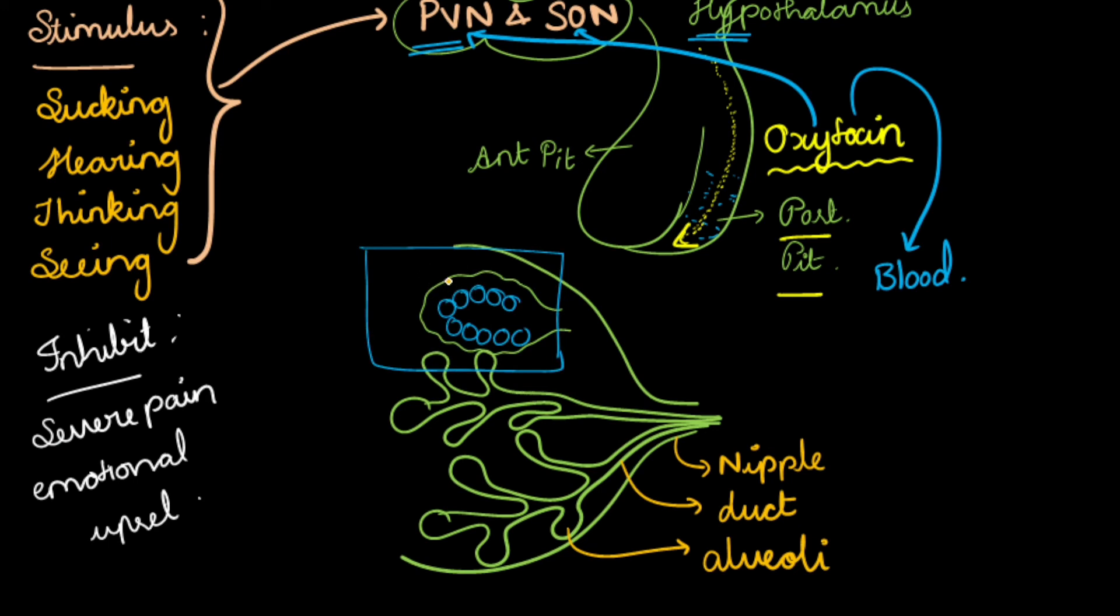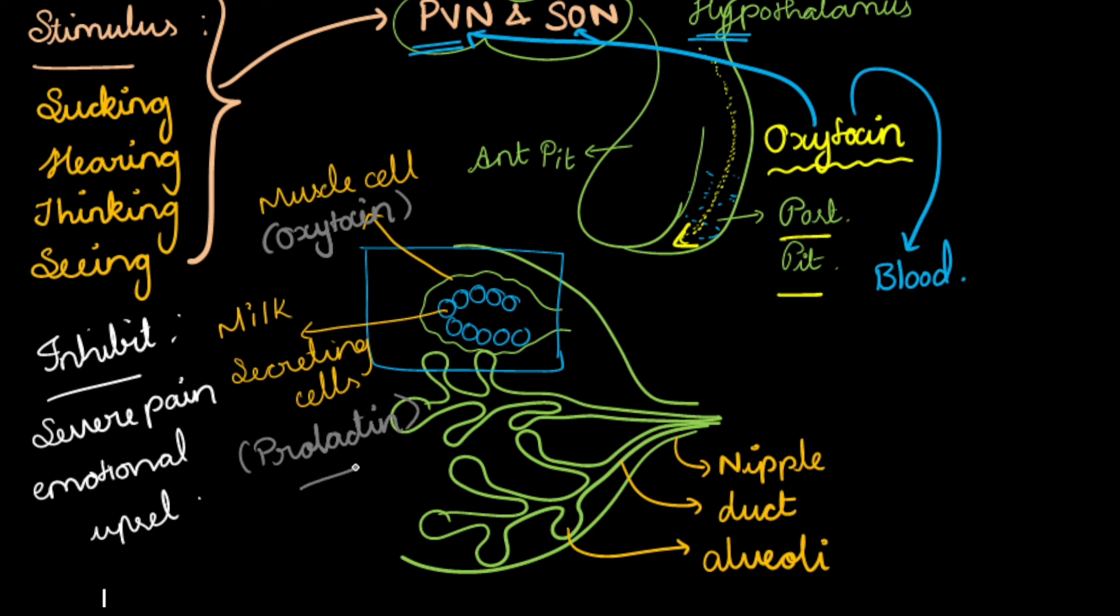This is the magnified structure and here we have to note two things. This outer layer is made up of muscle cells which are of epithelial origin, and then these blue color cells are none other than milk secreting cells. I would like to mention one important thing regarding this. These muscle cells are truly governed by our hormone oxytocin and these milk secreting cells are completely governed by the hormone prolactin. This prolactin is from anterior pituitary. We will discuss later regarding this.